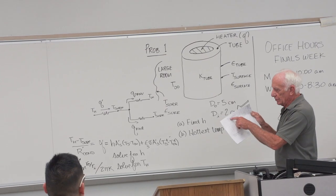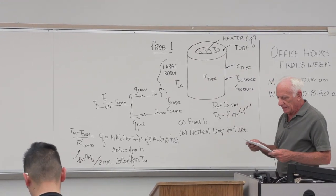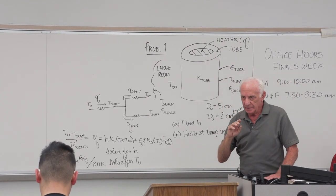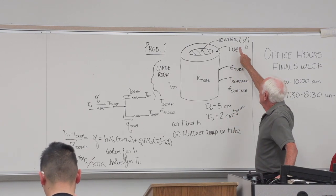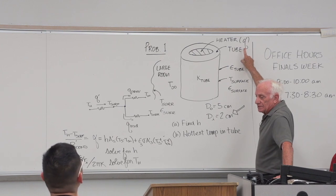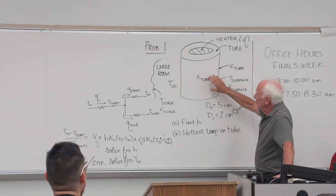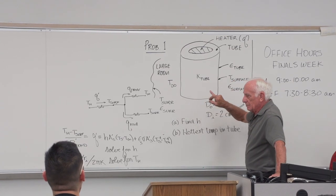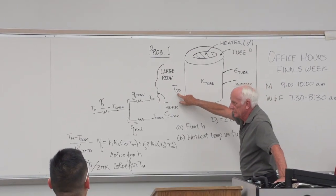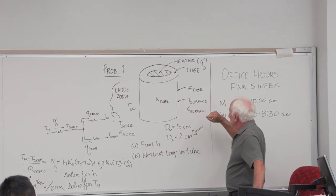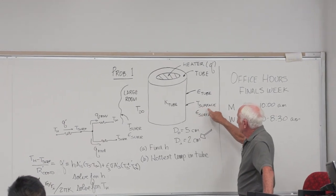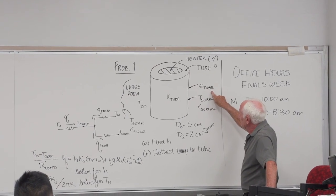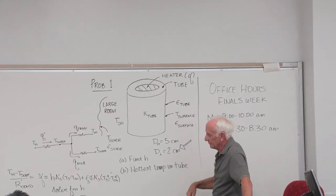The problem statement should have said inside diameter 2 centimeters. The problem involved a heater inserted in a tube. The K value of the tube was given. The heater input was given in Q prime — watts per meter. The tube was placed in a large room whose walls were at T-surroundings. There was air in the room at temperature T-infinity. These two are the same — don't need both.